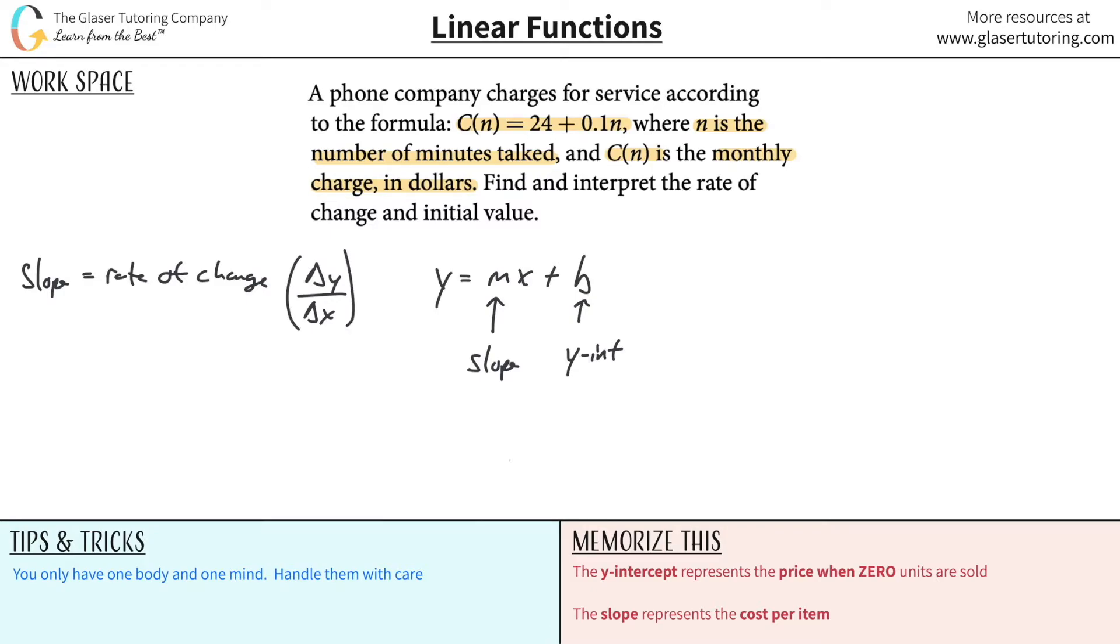So we know slope is basically going to be rate of change. Now, the other thing we need to keep in mind is it can also represent the cost per item. In economics, it also represents cost per item.